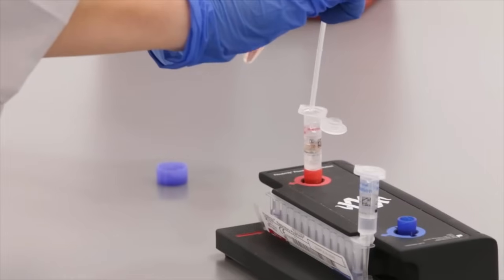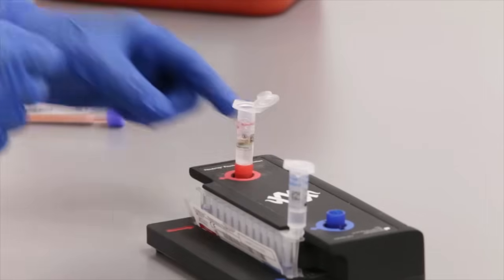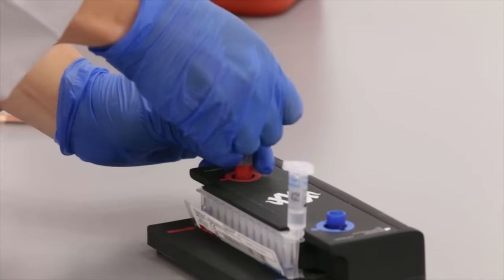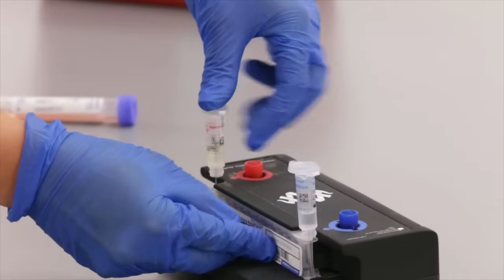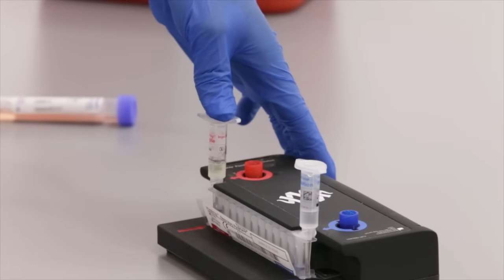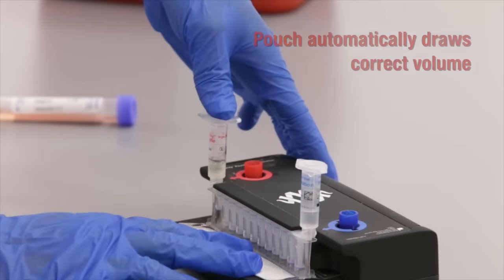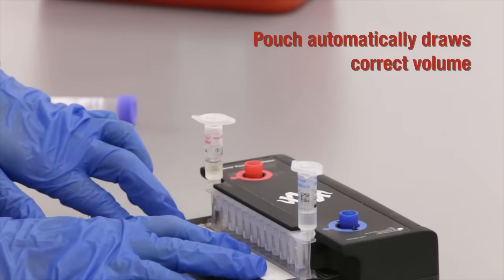Next, sample is added to the film array sample buffer. This solution is then mixed and injected into the film array pouch through the red inlet port located on the left side of the pouch. Again, the vacuum in the pouch automatically draws the required volume.